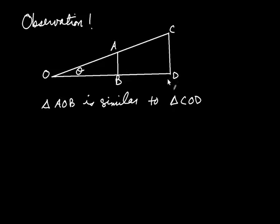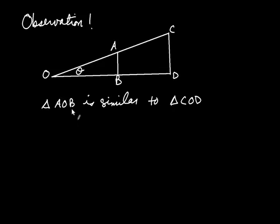When AB is parallel to CD, the two triangles have all the same angles. They both share this common angle, and I can see that this angle for the small triangle is equal to that angle for the big triangle, and likewise for the third angle. So all three angles are the same for both triangles.